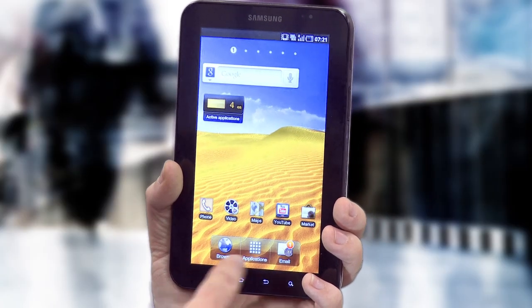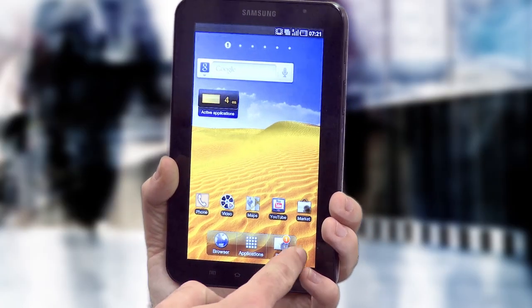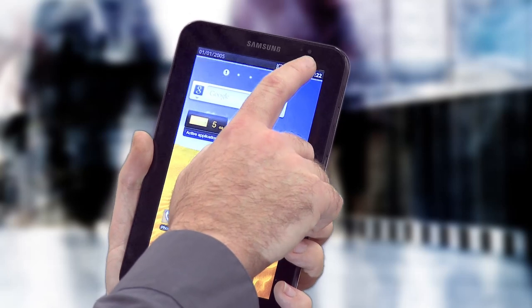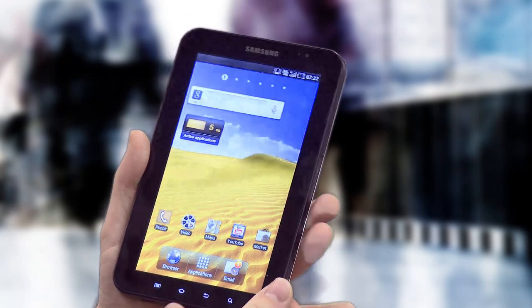The Samsung Galaxy Tab has a 7-inch screen with a 600 x 1024 resolution. It's got two cameras. There's one on the front, which is a 1.3 megapixel camera for video calls or taking self-portraits.